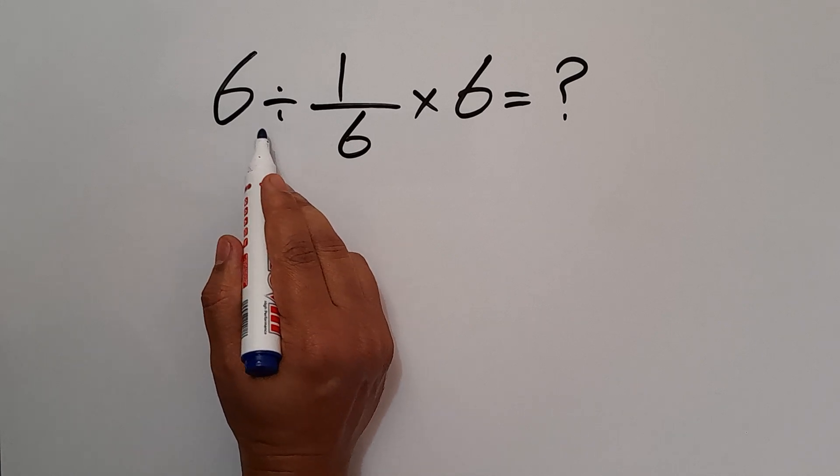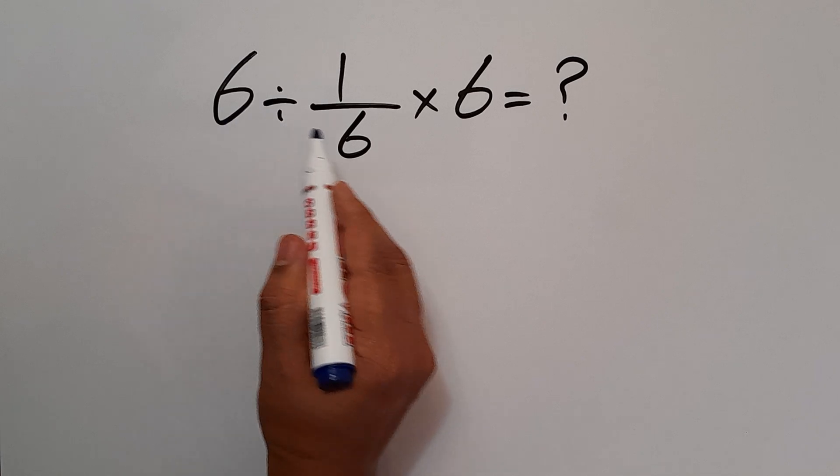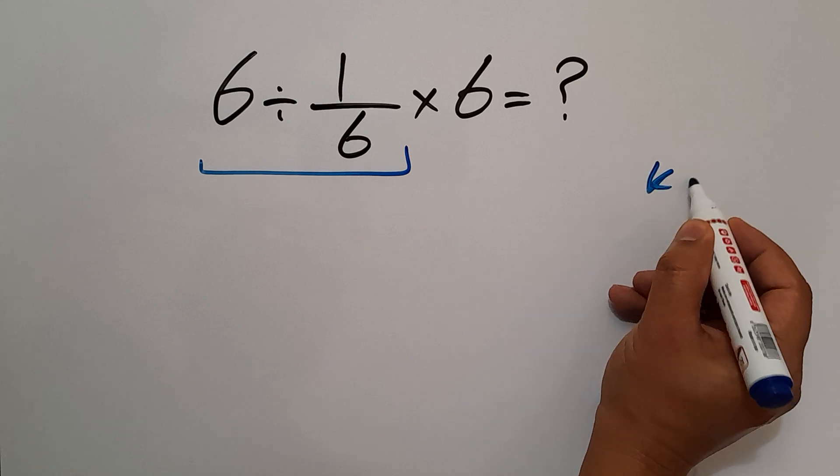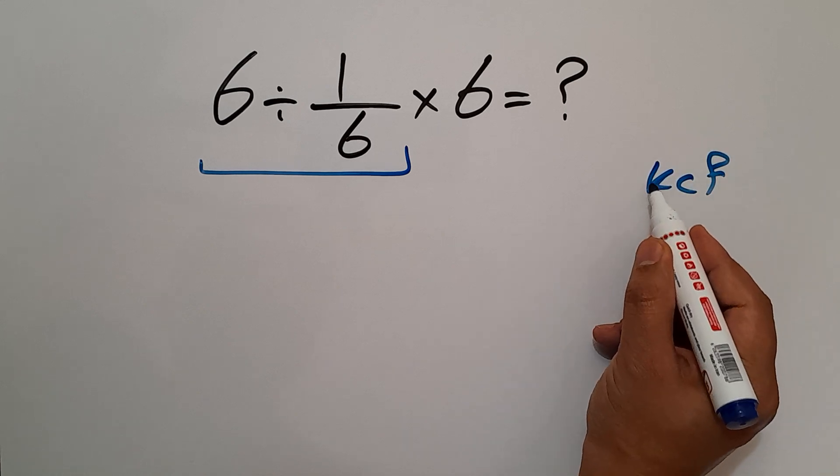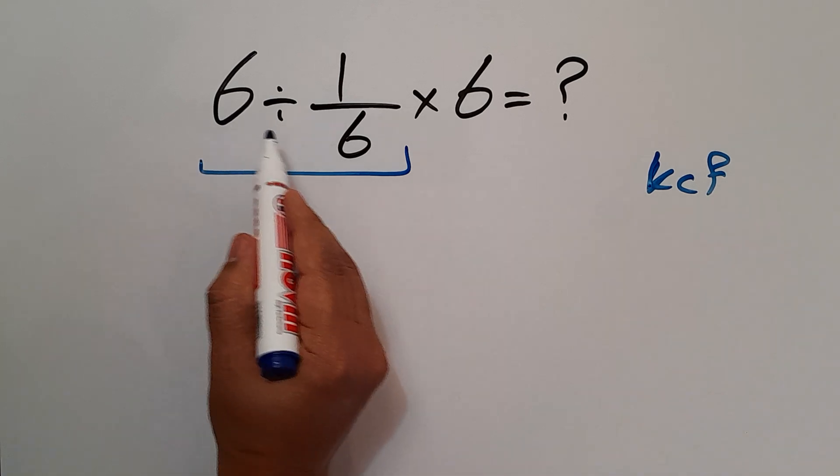So first, this division: 6 divided by 1 over 6. According to the KCF rule, K stands for keep, C stands for change, and F stands for flip. Keep the first fraction, change division to multiplication, and flip the second fraction.